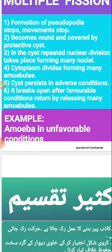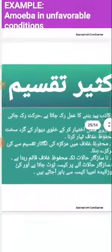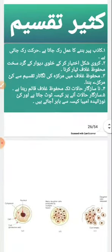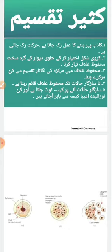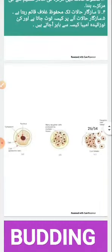The nucleus divides many times, cytoplasm also divides, and many amoebulas are formed. The cyst persists in adverse conditions and breaks open after favorable conditions return, releasing many amoebulas. As long as conditions are unfavorable, the protective covering remains intact, and as soon as favorable conditions return, the cyst breaks open and new amoebas come out.